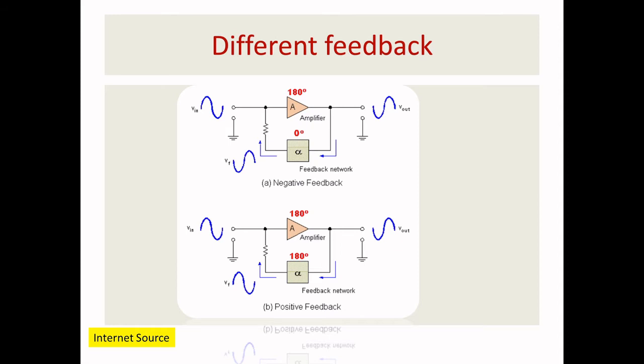Looking at amplifier feedback: we use negative feedback. Many students ask why we don't use positive feedback. With positive feedback, gain is high, but noise gets incorporated along with the fundamental frequency. Since the amplifier can't distinguish noise from the signal, both get amplified and the output is corrupted. Positive feedback also gives poor stability and reduced bandwidth.